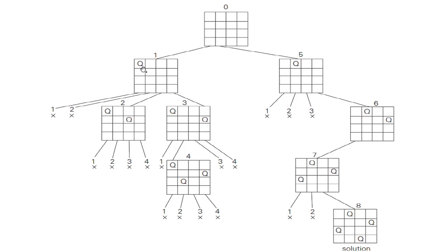Instead of placing the first queen in the first column, I will try to place it in the second column of the first row. Now the second queen cannot be placed in the first column — conflict; second column — conflict; third column — conflict. So I can place it in the fourth column. I have placed the second queen in the fourth column.